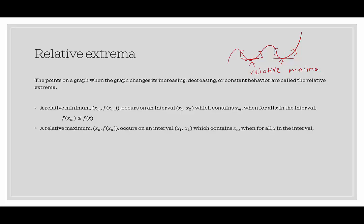On the contrary, we could have a relative maximum, which I'm defining as (x_n, f(x_n)). And those would occur on the intervals (x_1, x_2) which contain x_n, when for all x in the interval, that value is larger than or equal to all the other output values in that interval.